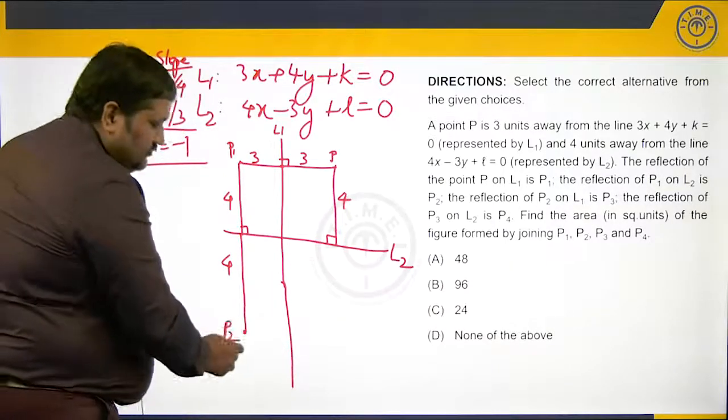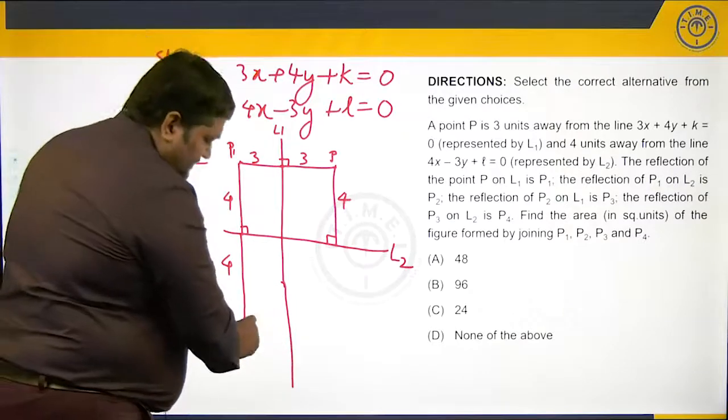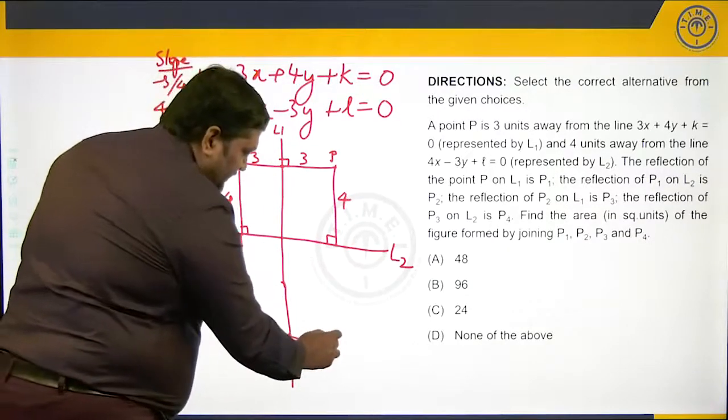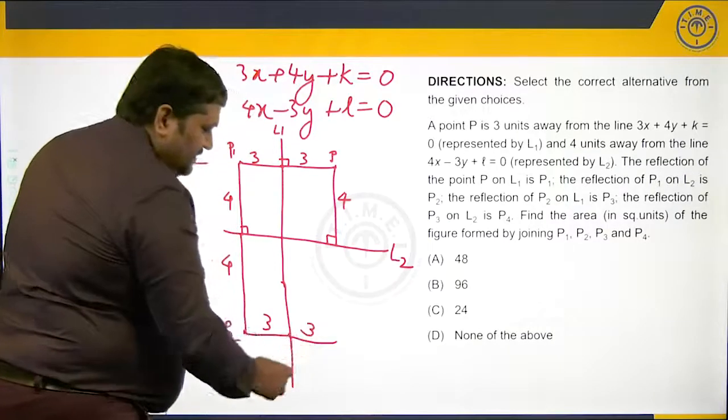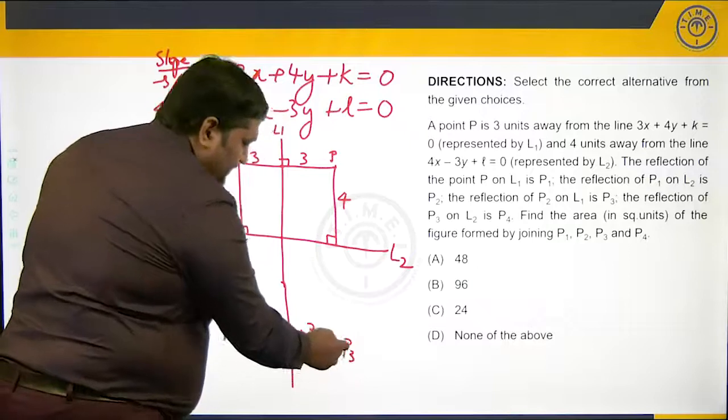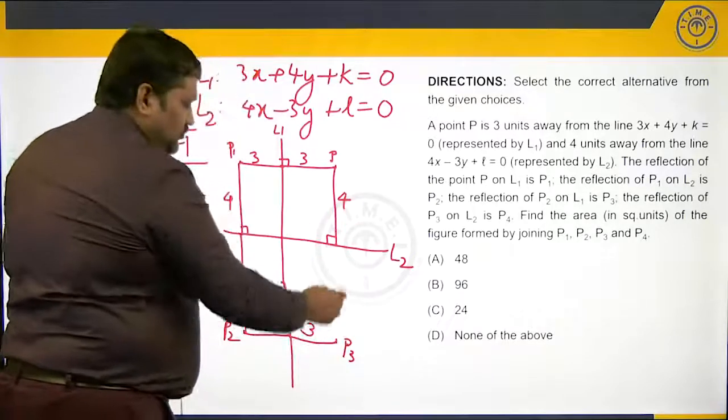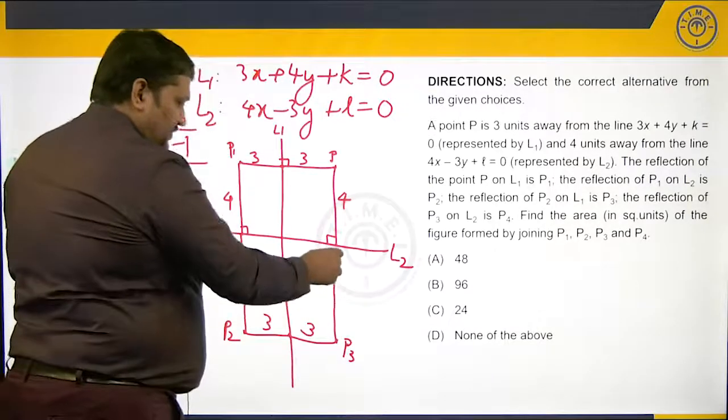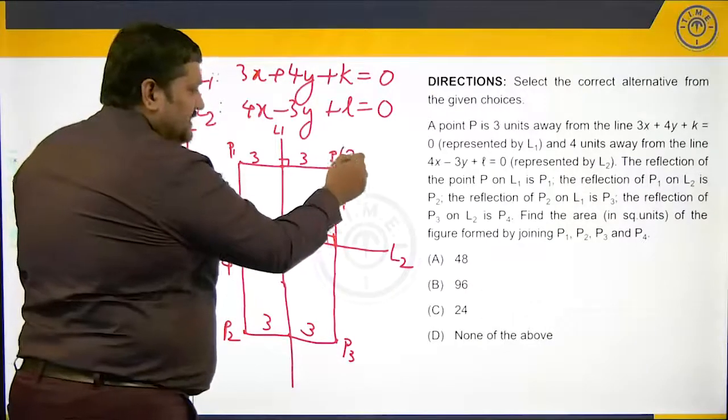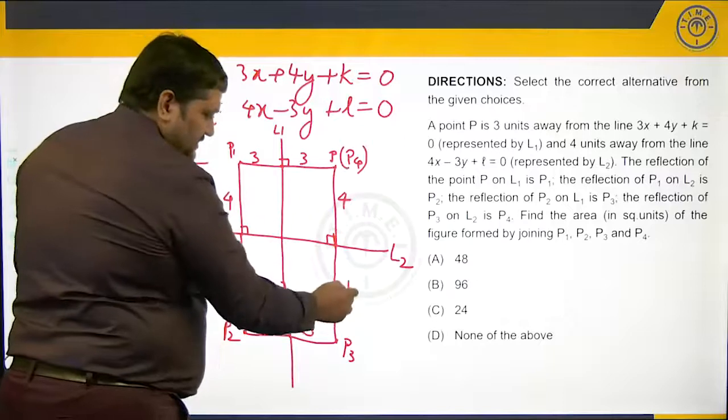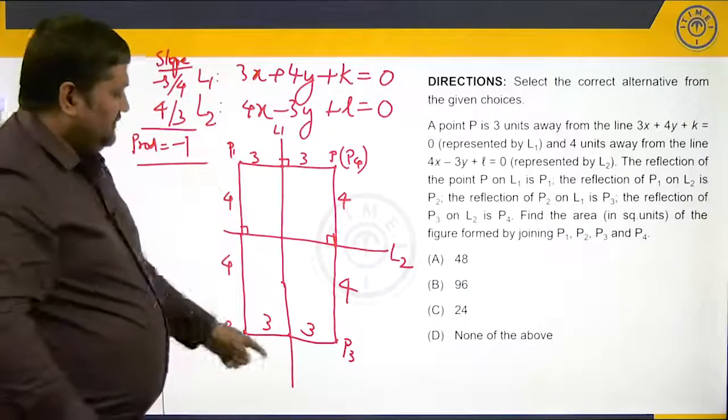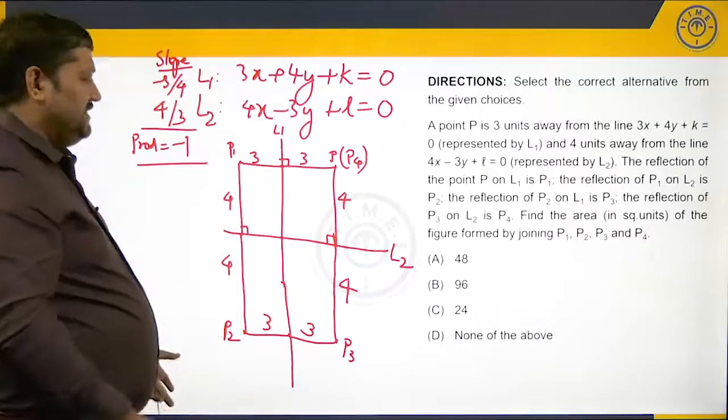The reflection of P2 on line 1—this distance is 3 units away—so it will be further 3 units away. This is P3. The reflection of P3 on line 2, this distance is 4, so we get P4. What we end up getting is that P1, P2, P3, P4 form a rectangle.